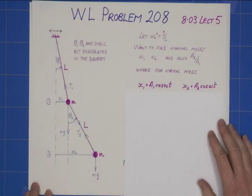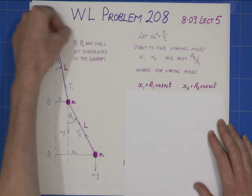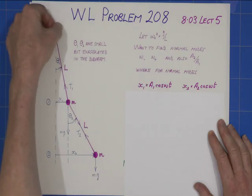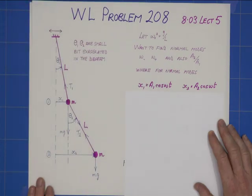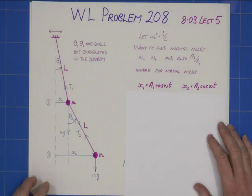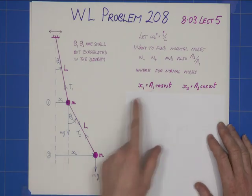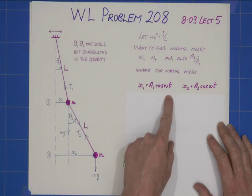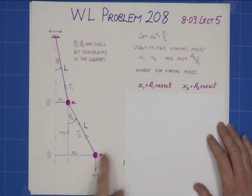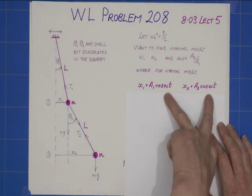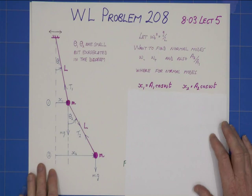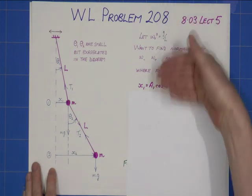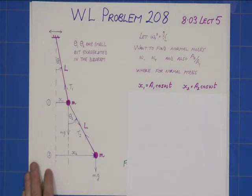We will just gently joggle the pendulum to excite it into its resonant states. So, I assume that x1 will be of the form A1 cos omega t, and x2 will be of the form A2 cos omega t. Note, the omegas must be the same. That must be true for normal modes. And if you're lost by any of this, then you really do need to look at Lecture 5.